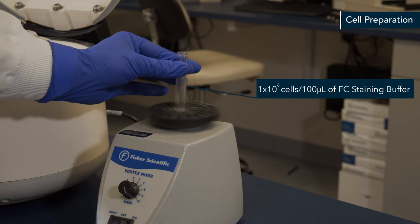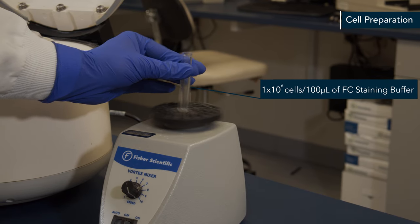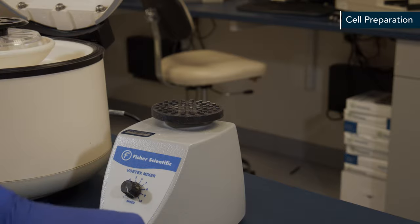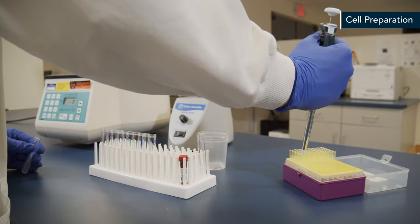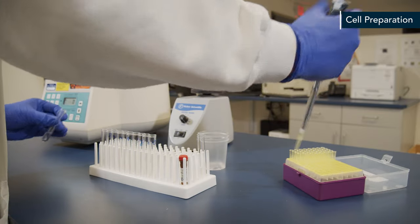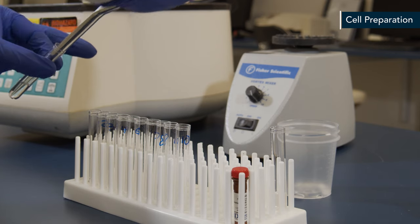Harvest your cells and on the last wash step, resuspend the cells at 1 million cells per 100 microliters of flow cytometry staining buffer. Aliquot 100 microliters into each fax tube.